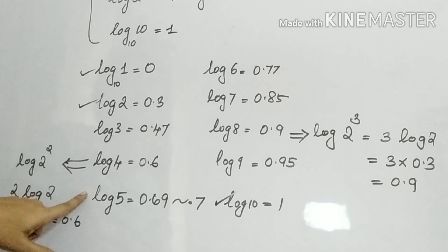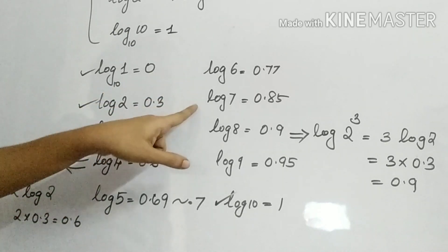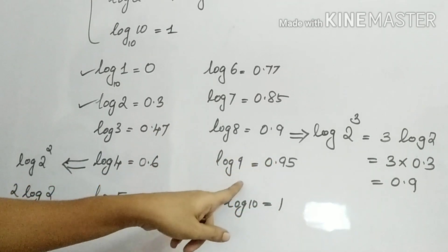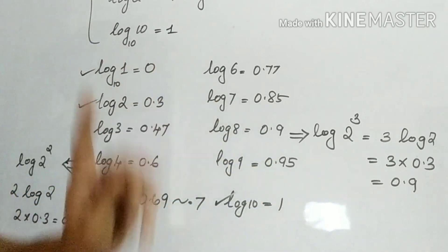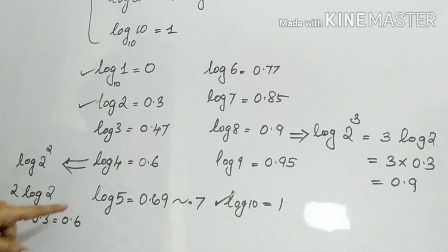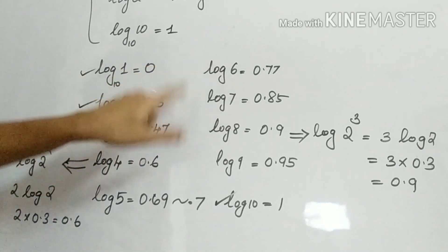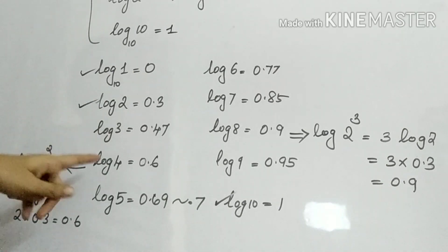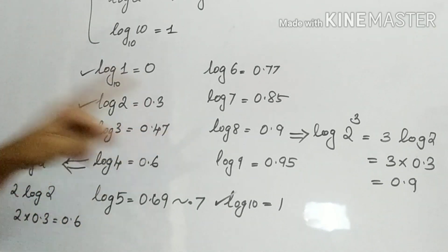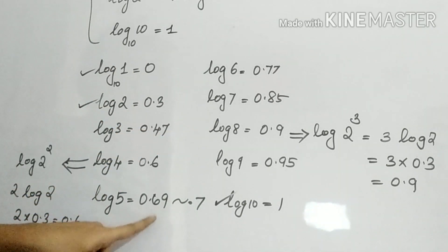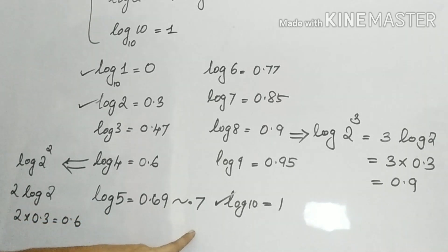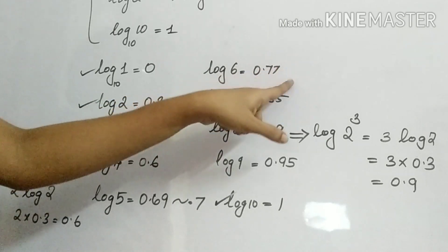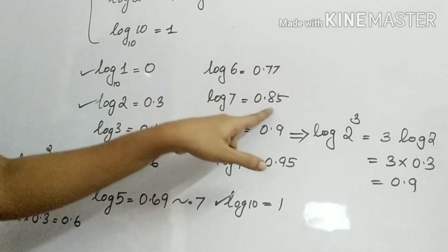Log values to remember: log 3 is 0.47, log 5 is 0.69, log 6 is 0.77, log 7 is 0.85. With these values you will not have problems.